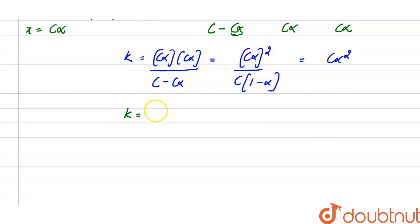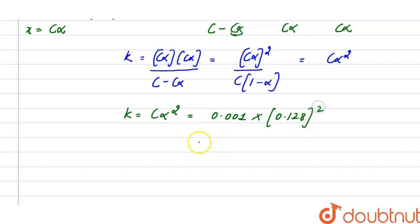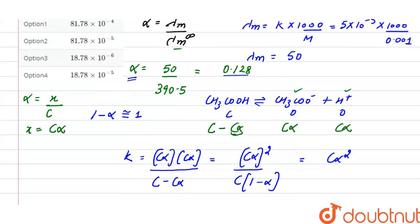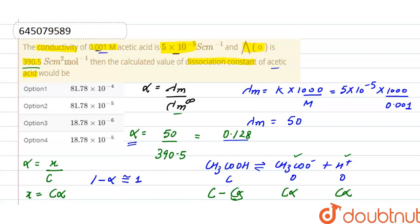Calculating the dissociation constant: Ka equals C·alpha² equals 0.001 multiplied by (0.128)². After solving, the dissociation constant is 16.38×10⁻⁶. The correct option is the nearest answer to this value, which is option 3: 18.78×10⁻⁶.